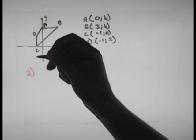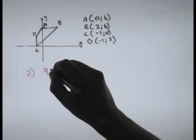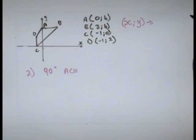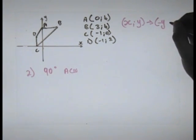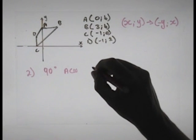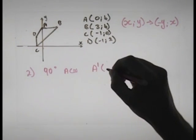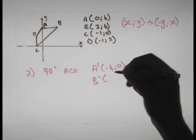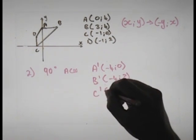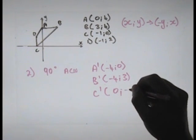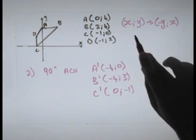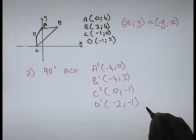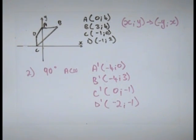The next rotation is 90 degrees anti-clockwise. The rule is (x, y) → (-y, x). New A becomes (-4, 0). New B becomes (-4, 3). New C becomes (0, -1). New D becomes (-2, -1). And that is the 90 degrees anti-clockwise rotation.